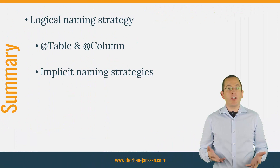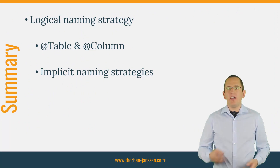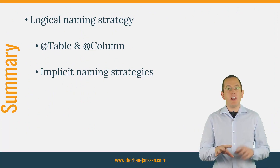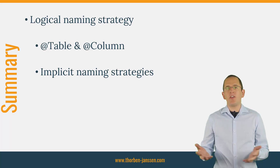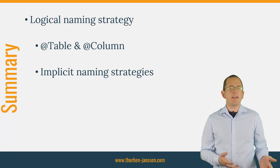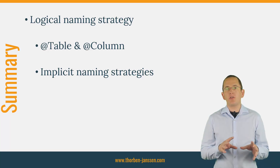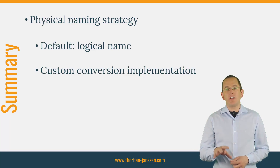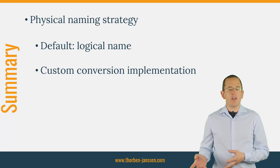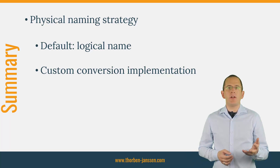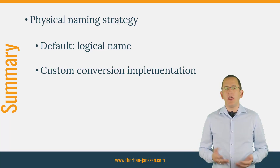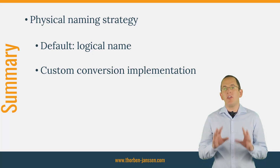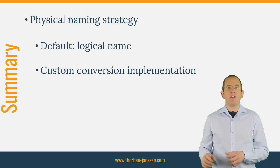Hibernate's naming strategy provides you with lots of flexibility. It consists of two parts: the mapping of the logical and the physical name. You can explicitly define the logical name using the @Table and @Column annotations. If you don't do that, Hibernate uses one of its implicit naming strategies — the default one is compliant with JPA 2.0. After the logical name is determined, Hibernate applies a physical naming strategy. By default it returns the logical name, but you can use it to implement a conversion applied to all logical names, providing an easy way to fulfill your internal naming conventions.